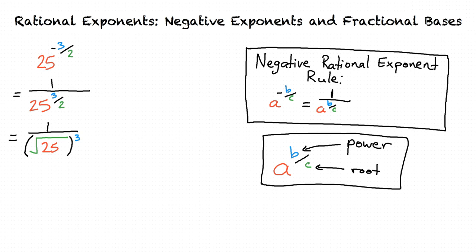Oh, that makes sense now. I know the square root of 25. That's 5. Then I take 5 to the third power, which is 125. So the final answer is 1 over 125. Very good.